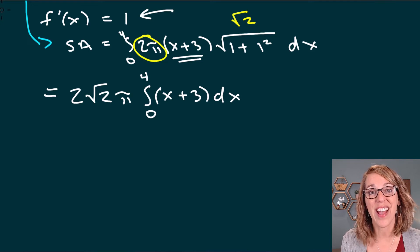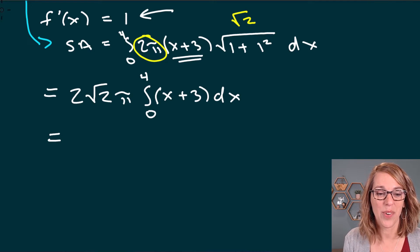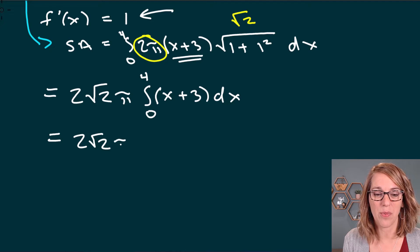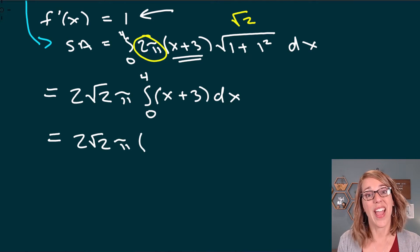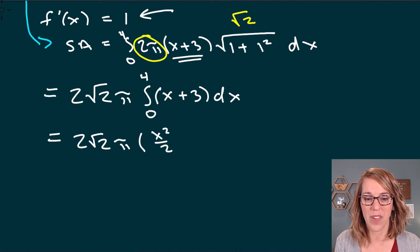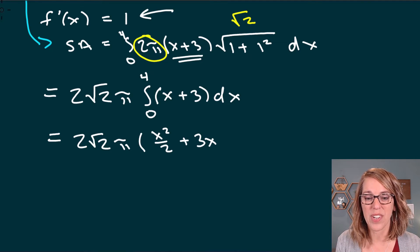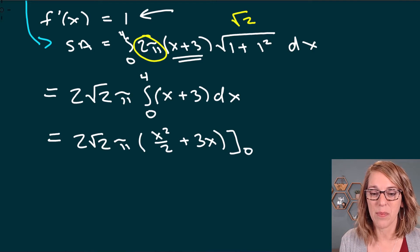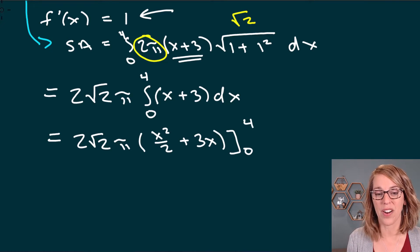That's a super nice integral. Working through it: 2√2π times the antiderivative — the integral of x gives x squared over 2, and the antiderivative of 3 is 3x. We evaluate this from 0 to 4.